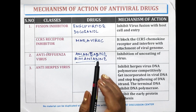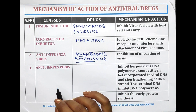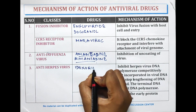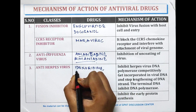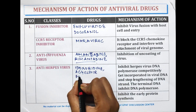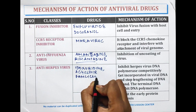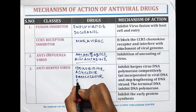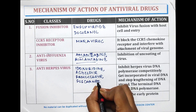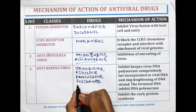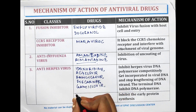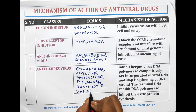Anti-herpes virus drugs: the drugs acting on herpes virus are idoxuridine, acyclovir, famciclovir, foscarnet, ganciclovir, and valganciclovir.